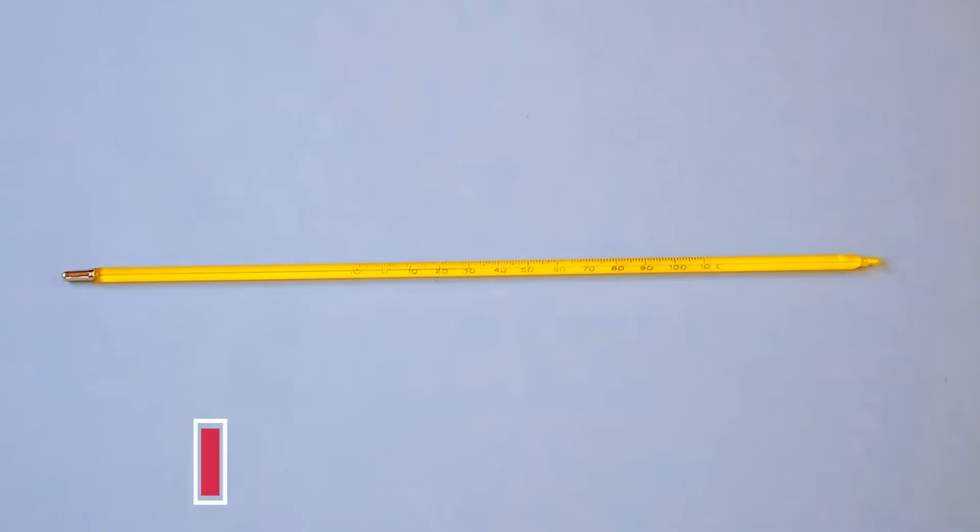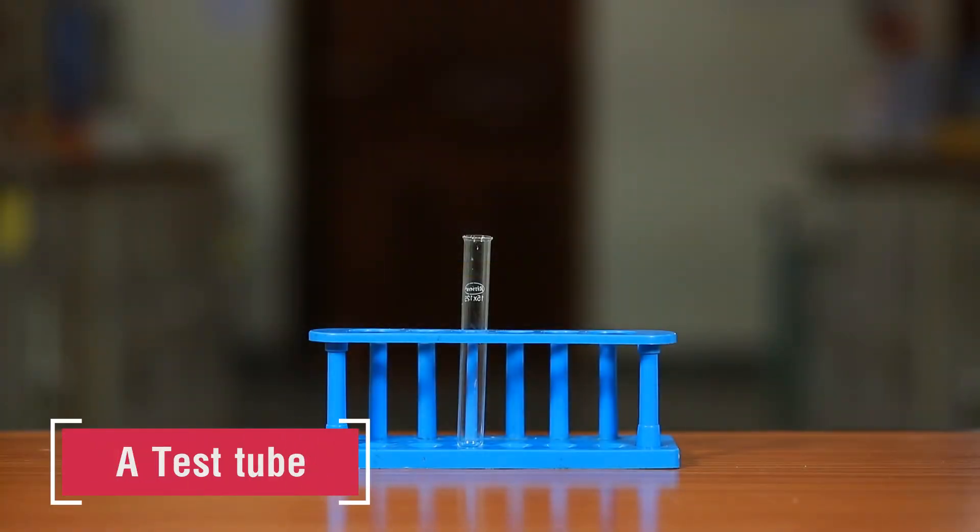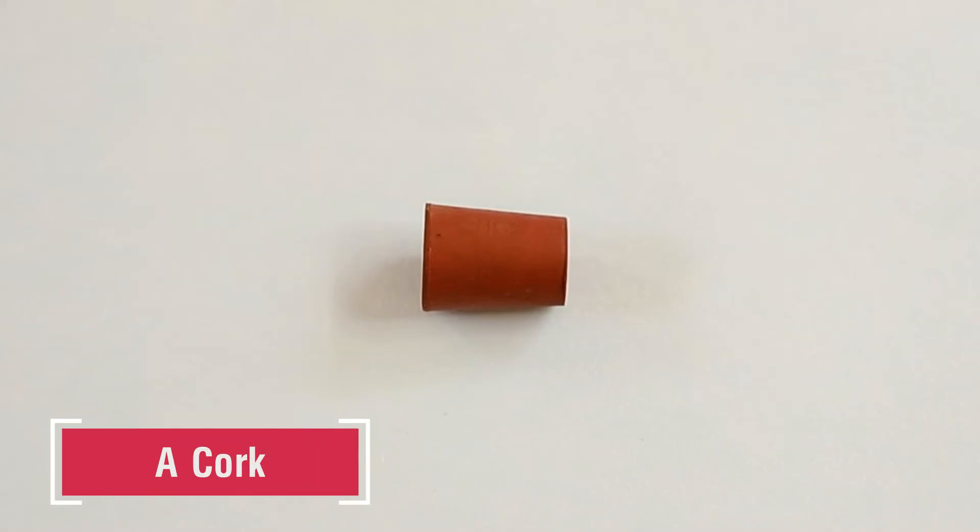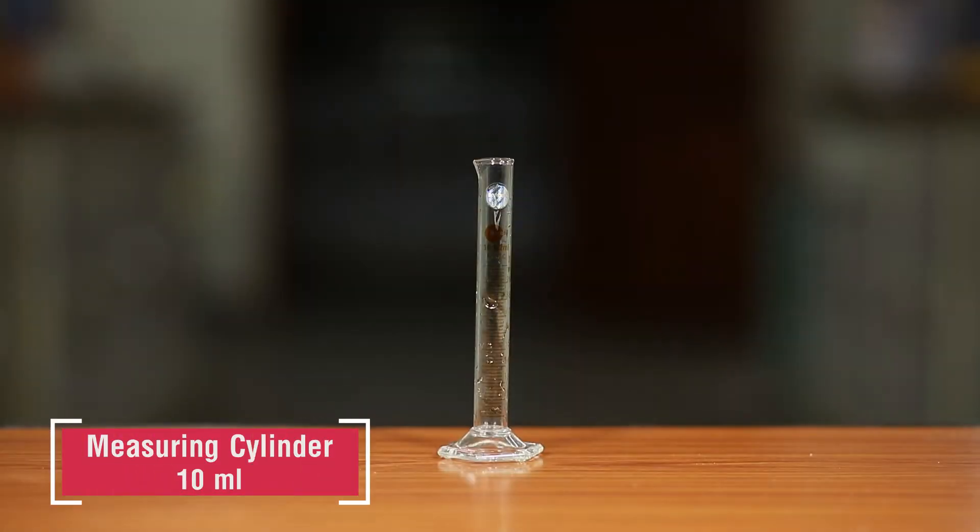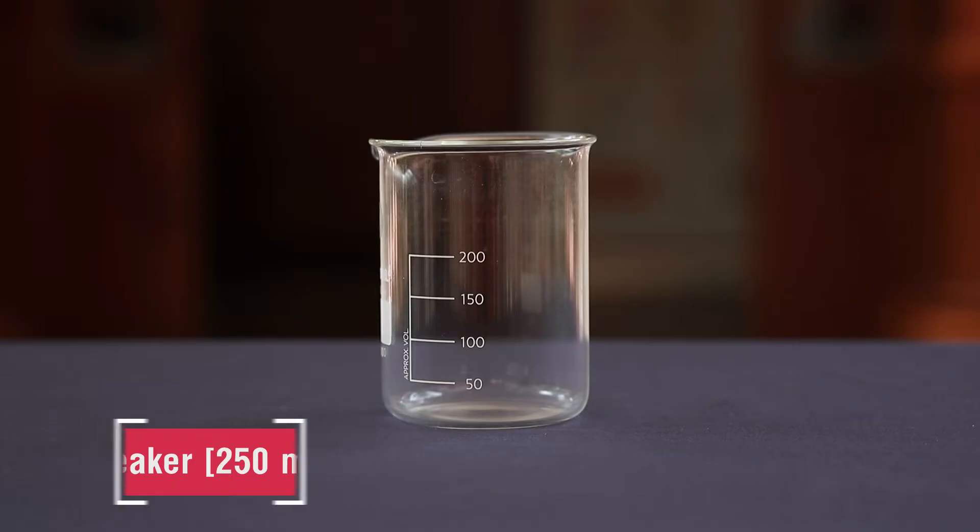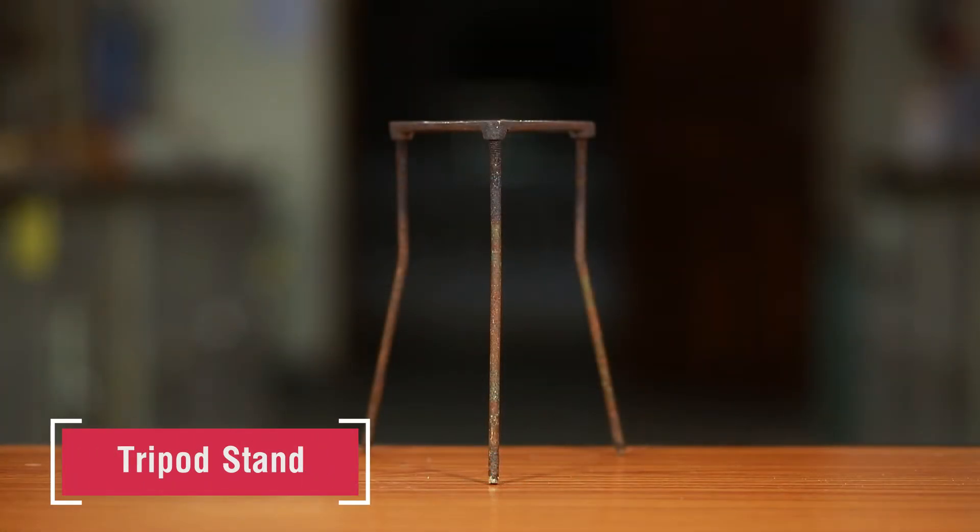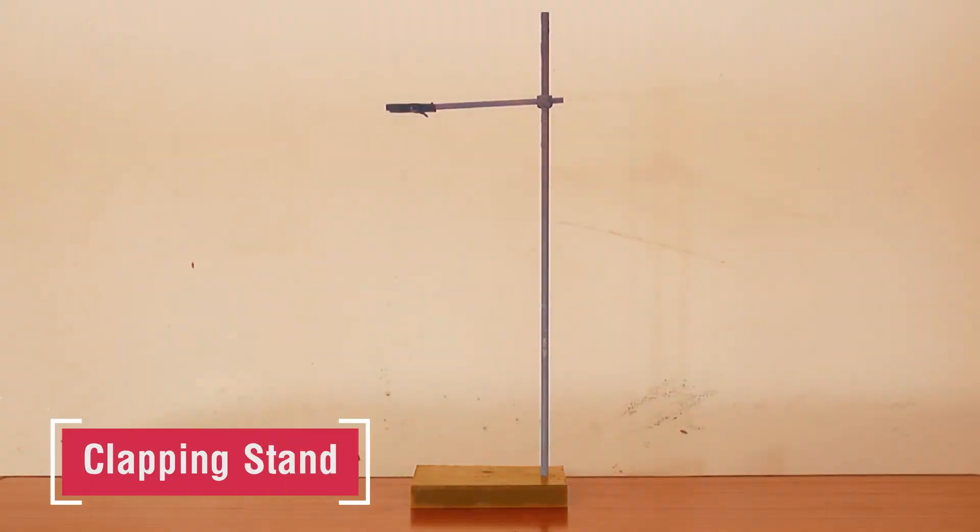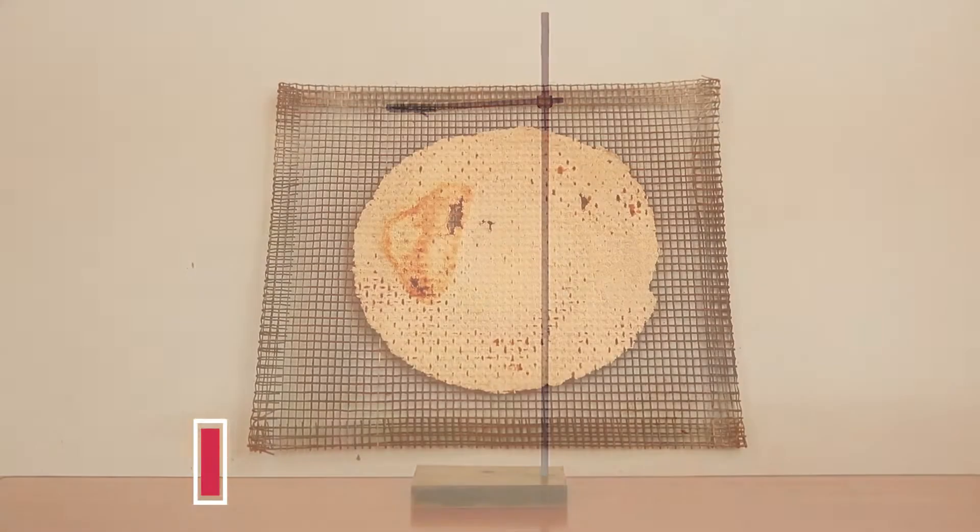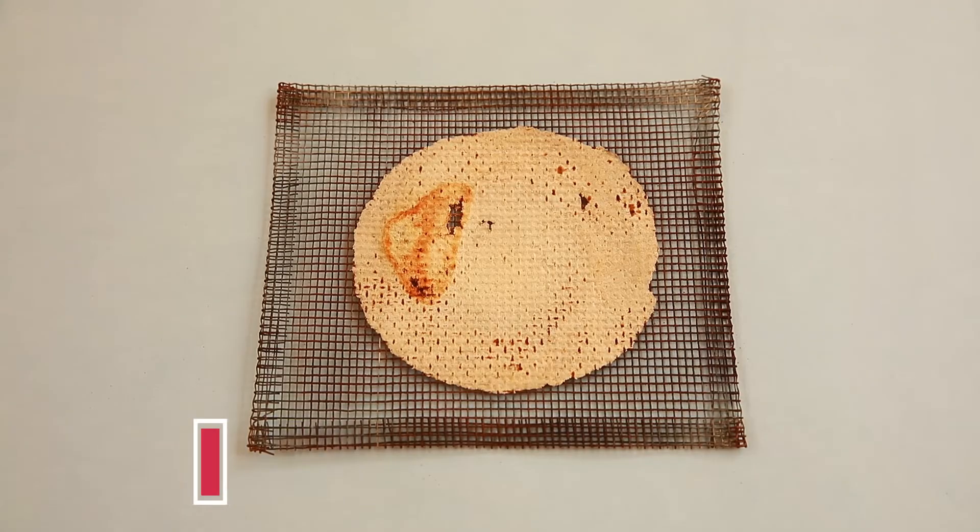Additional equipment: test tube, cork, 10 ml measuring cylinder, 250 ml beaker, burner, tripod stand, clamping stand, wire gauze, and dropper.